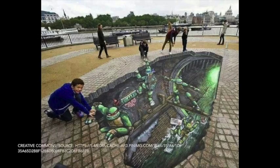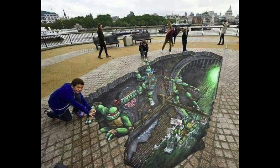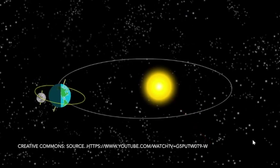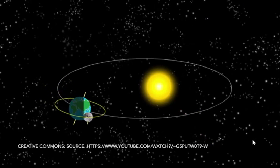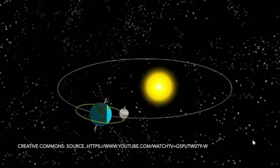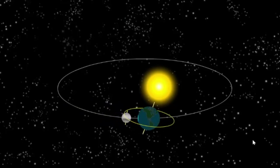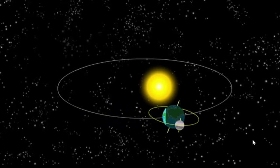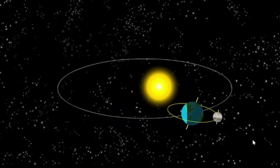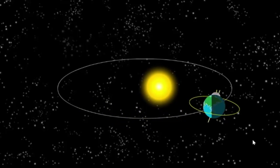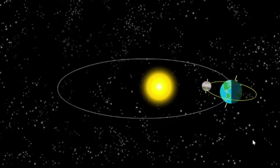An optical illusion is when we see something that we think is happening, or that we think is real, and it's actually not. So even though it appears that the sun is moving around the earth, it's actually the opposite — the earth is revolving around the sun.